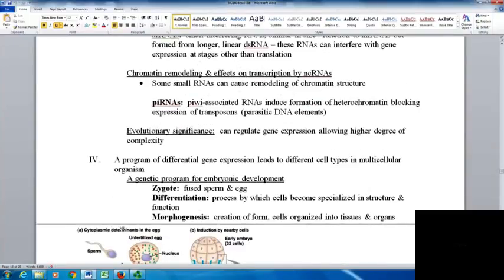Differential gene expression can lead to different cell types in multicellular organisms. This is how you go from being a zygote, just a single cell from sperm and egg, into a multicellular organism with very specialized different cells throughout your body. Differentiation is the process by which cells become specialized in structure and function.